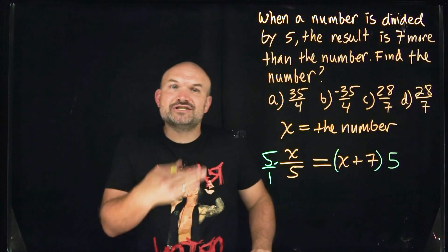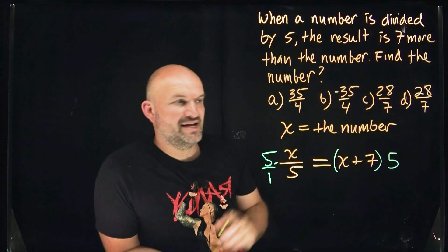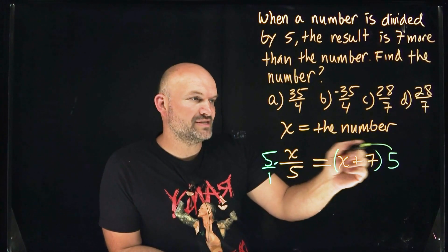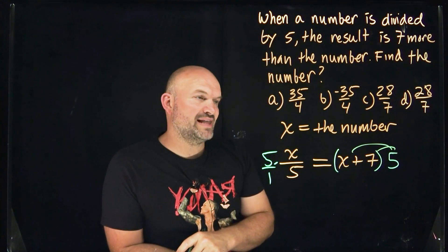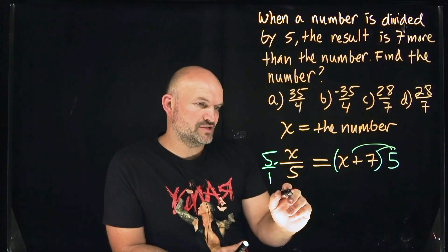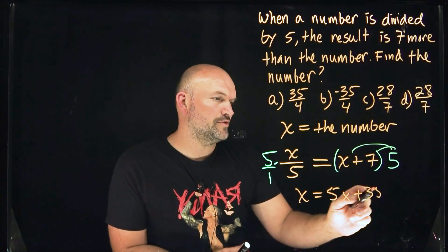And notice what I'm doing. I am inserting parentheses. Why? Because it's not five times X, it's not five times seven. It's five times (x + 7). So I need to make sure I multiply that five times both of them. So on this left side, I just get one times X, which gives me an X. And then over here, I'm going to get 5x + 35.